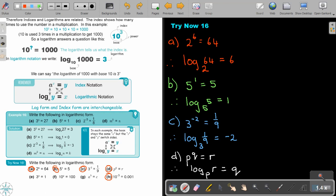And then the final one will be number H. So 10 to the power of negative 3 is equal to 0.001. So therefore log 10, 0.001 is equal to negative 3. And that's how you keep the base and you just swap that two.